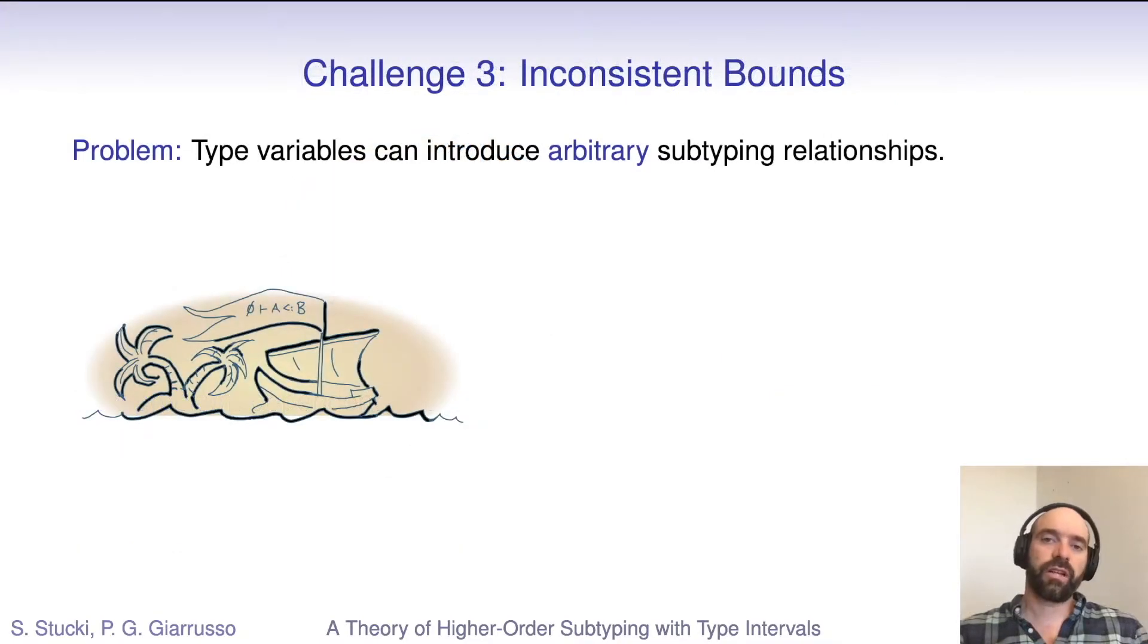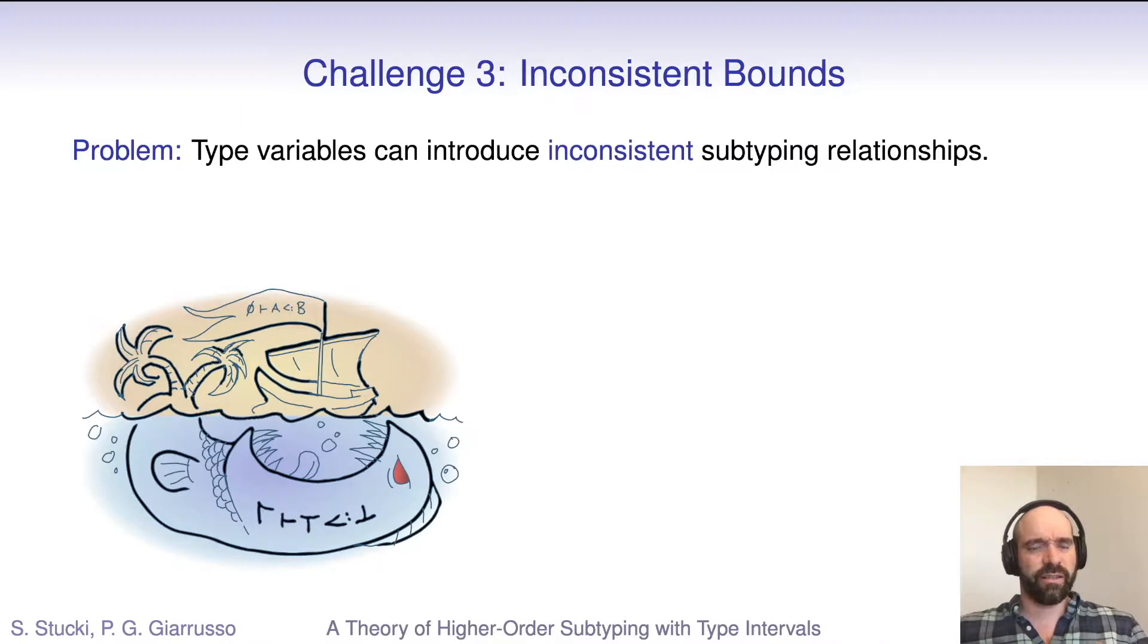The third challenge is of a somewhat different nature. Like dot, F-omega-int features a form of subtyping reflection. Programmers can introduce custom subtyping rules into the subtyping judgment via type intervals. This is a really powerful type system feature, and it can be used for good, but it also has a dark side because we can reflect inconsistent subtyping rules into the subtyping judgment and break type safety.